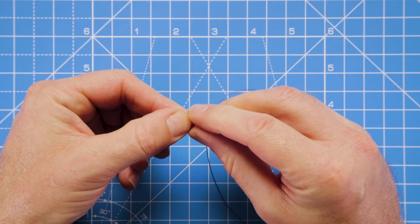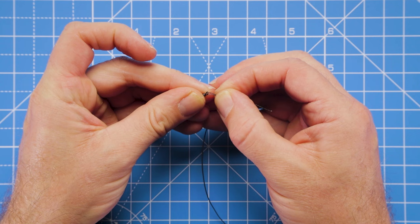You just want to pinch that down so it folds down nice and fine so that you can thread it through one end of the micro swivel.